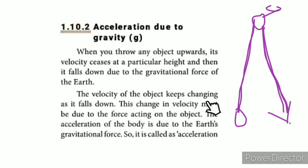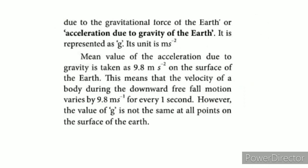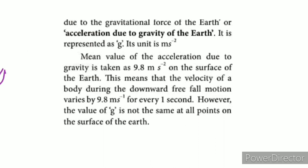The velocity of the object keeps changing as it falls down. This changing velocity must be due to the force acting on the object. The acceleration of the body is due to the Earth's gravitational force. The acceleration due to the gravity of the Earth is denoted as small g.